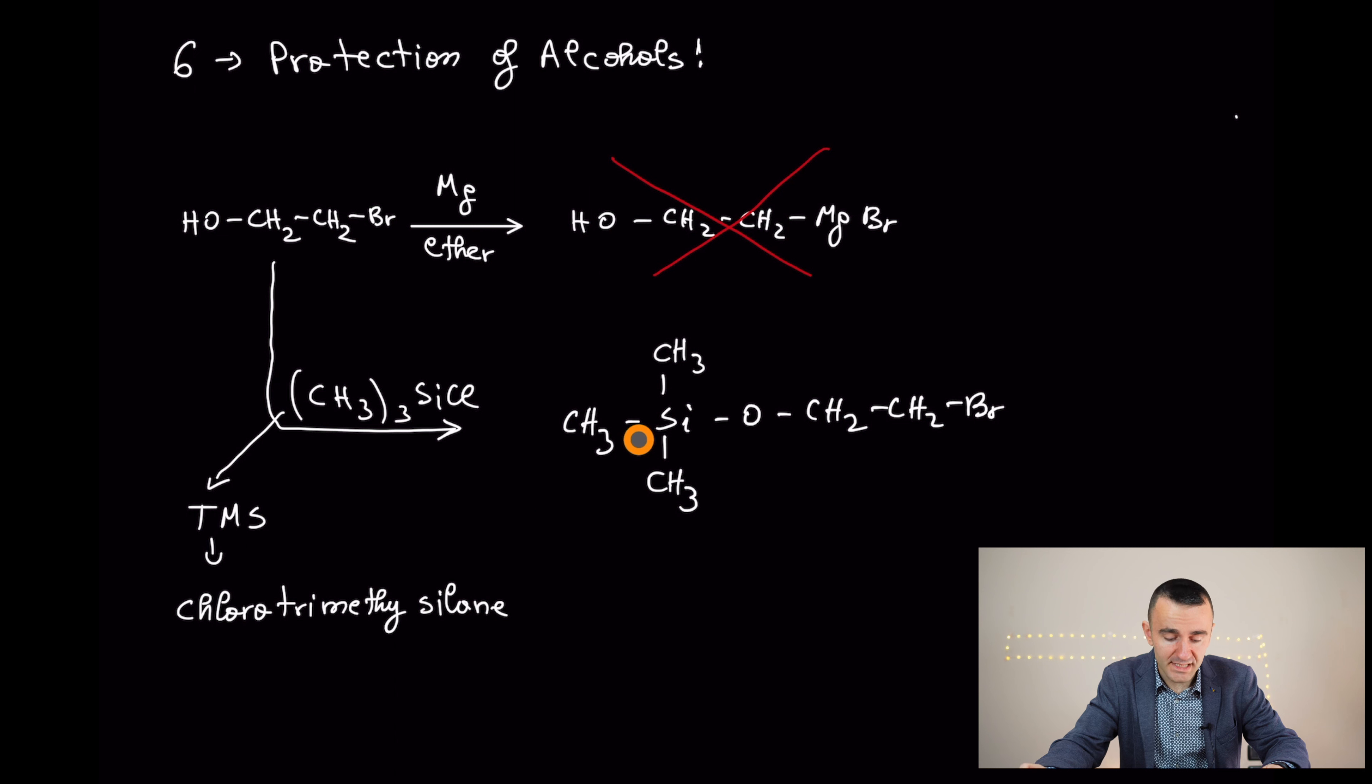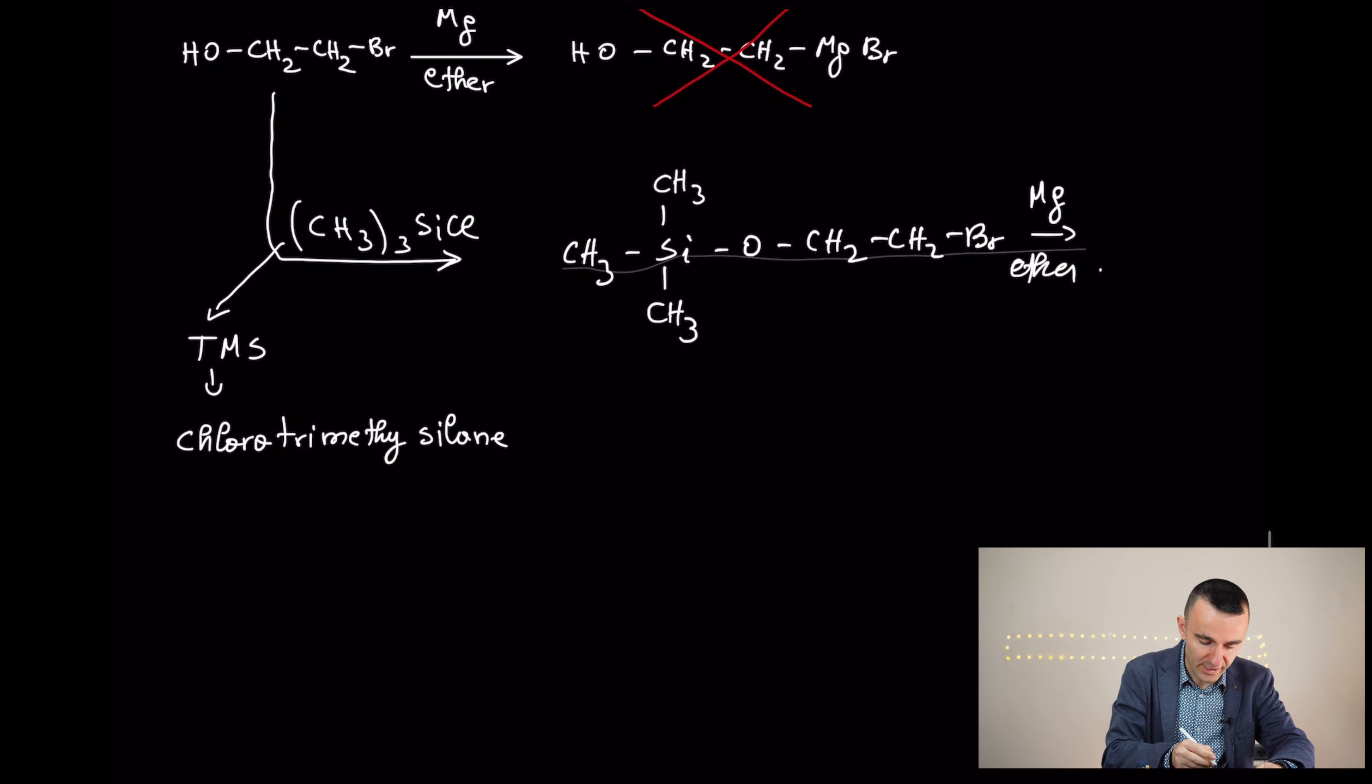In this case, this is an ether and is not so reactive. We are going to see in the next video, hopefully next week, about ethers and they are not so reactive. So we can carry out now the reaction to form the Grignard reagent. Right? So we can treat this because this side here is protected. We can treat this with magnesium in ether. And what we are going to have, the Grignard reagent ready.